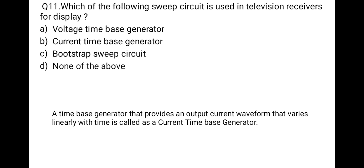The next question: which sweep circuit is used in a television receiver for display? Options: voltage time-based generator, current time-based generator, bootstrap sweep circuit, or none of the above. A linear time-based current waveform is required in the deflection of a TV receiver, so the correct option is B: current time-based generator — a generator that provides an output current waveform that varies linearly with time.